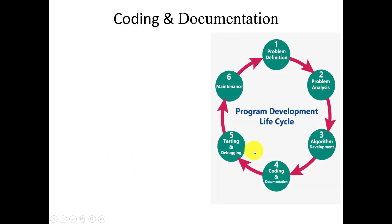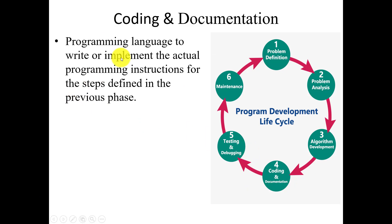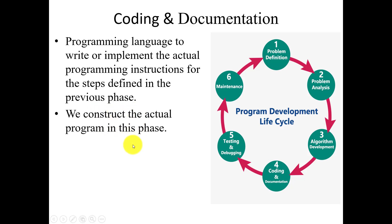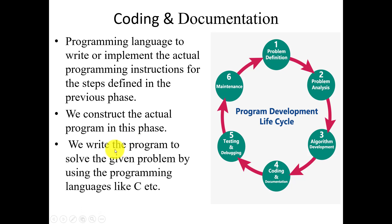The next phase of the program development life cycle is coding and documentation. Here we implement the actual program instructions for the steps defined in the previous phases. We write actual code and construct programs using different programming languages. It drives the program to solve the given problem using programming languages like C, C++, Java, etc.